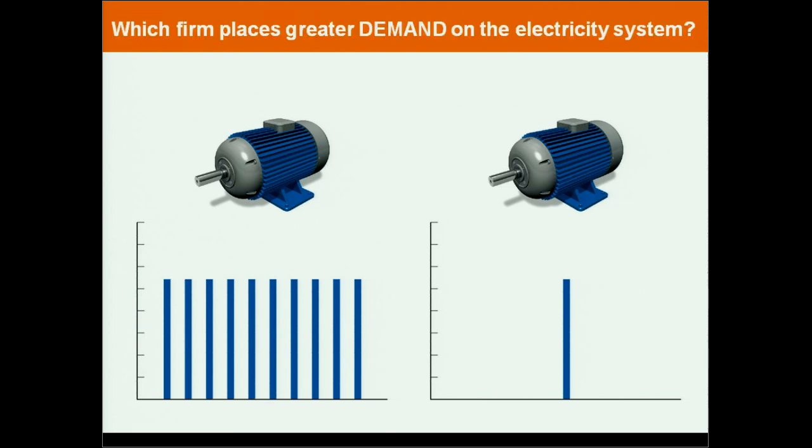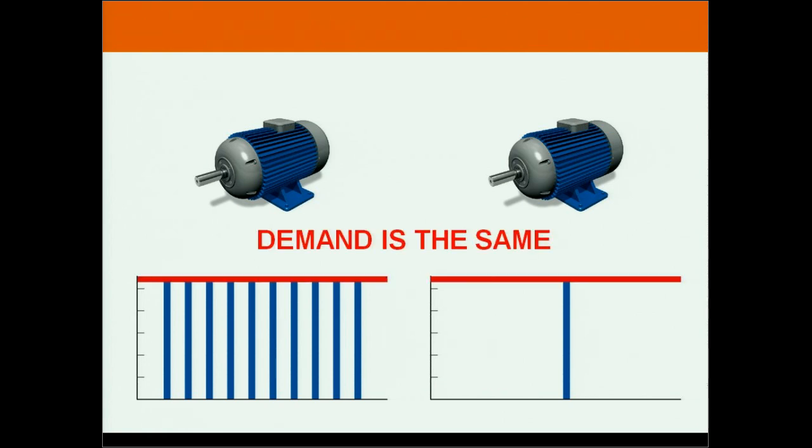But the key question is, which firm places greater demand on the system? Now think about what demand is in answering this question. Demand is the maximum amount of usage that the customer places on the system. And we see that, in fact, the demand is exactly the same. Even though the first customer uses ten times more energy, the facilities that stand ready to serve those customers must be exactly the same size, and they have the same demand charge as a result.